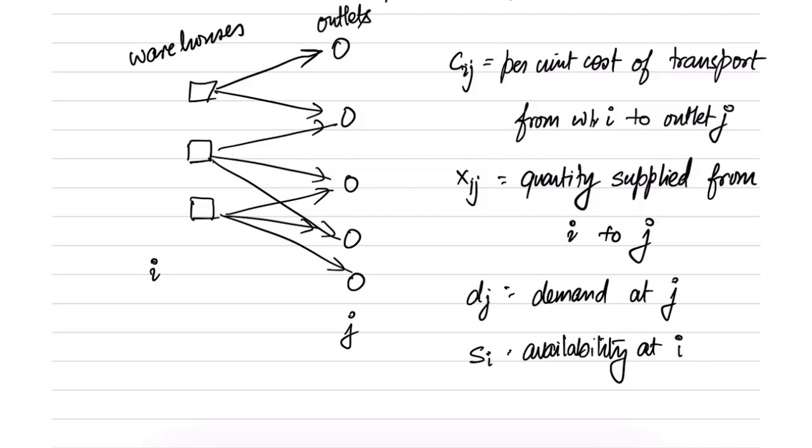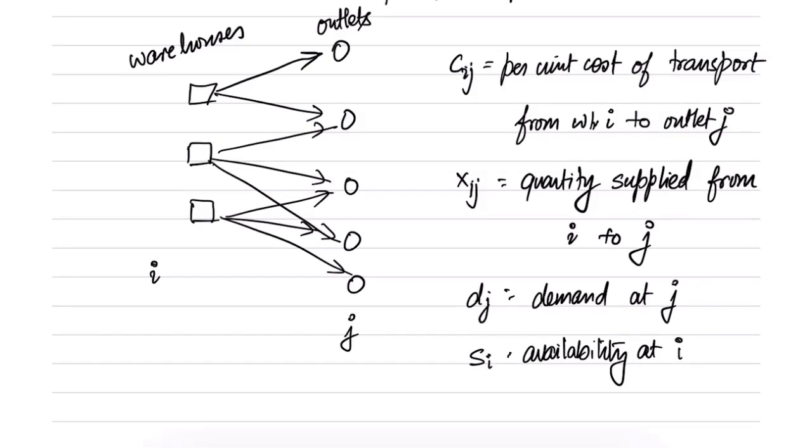We have listed all our notation. Si is the availability, dj is the demand, Xij is the quantity supplied from i to j, and Cij is the per unit cost of transport. If there is a company that holds the warehouses and outlets, it would be interested in minimizing the total cost that it has to spend on the transportation.